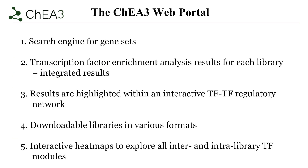The CHIA-3 web application acts as a search engine for gene sets and performs transcription factor enrichment analysis for each library and the integrated library. It integrates the results on the user input gene set, checks for overlap between inputted genes and transcription factors, and ranks transcription factors based on the significance of the overlap. CHIA-3 also features visualization of a global mammalian transcription factor regulatory network, interactive heat maps for inter- and cross-library transcription factor modules, and builds upon prior versions of CHIA by including more libraries, adding benchmarks, and cross-library analyses.